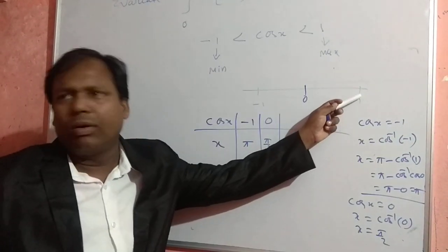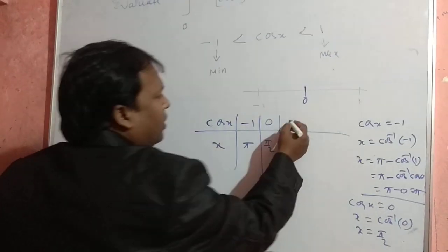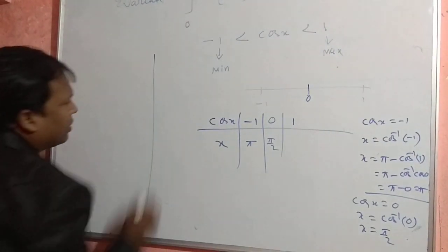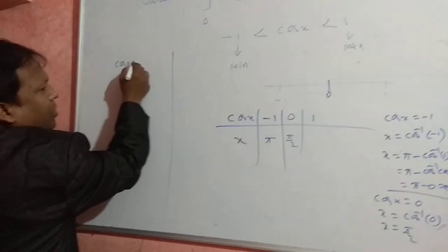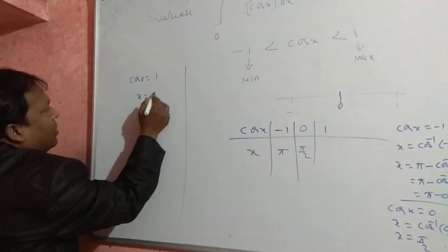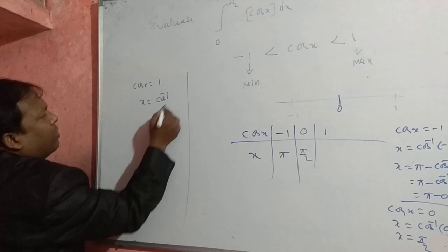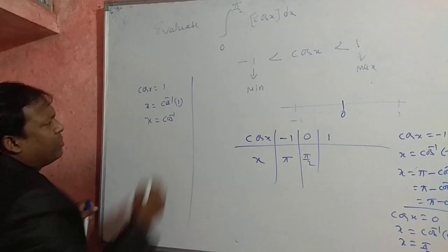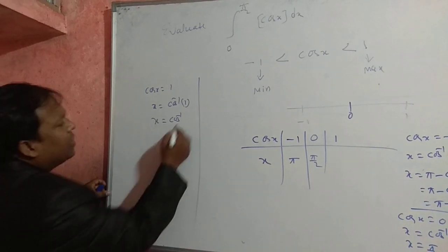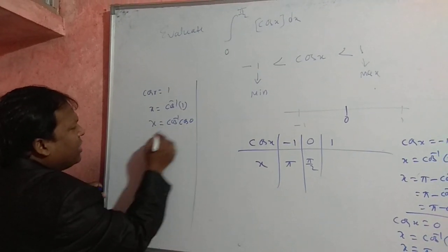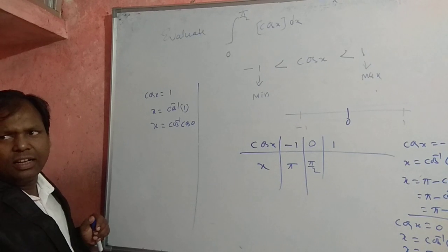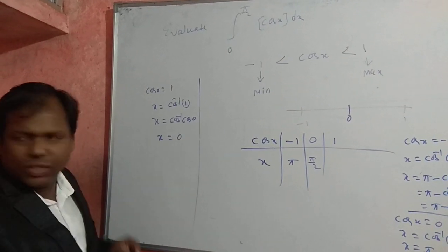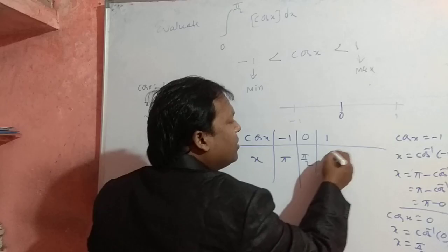Similarly, if cos x = 1, then x = cos⁻¹(1) = cos⁻¹(cos 0). Using the identity cos⁻¹(cos θ) = θ, we get x = 0. So when cos x = 1, x = 0.